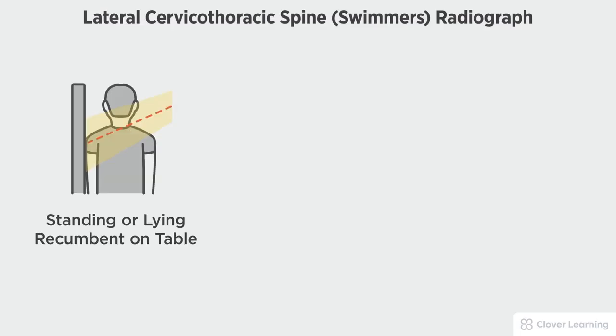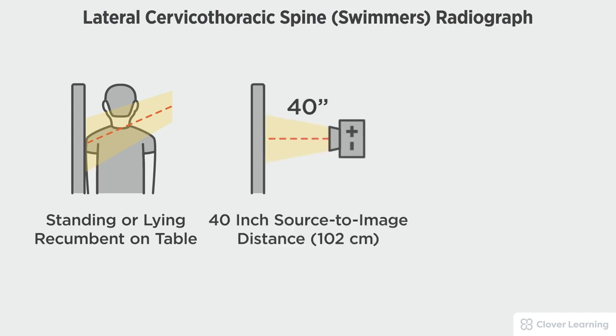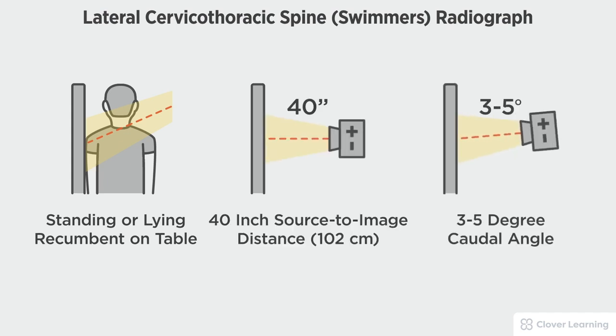In this view we will be demonstrating the lateral cervical-thoracic spine, or swimmer's view. The lateral swimmer's cervical-thoracic spine should be performed with the patient standing at the upright Bucky or lying on the table, a 40-inch source to image distance, and if needed a three to five degree caudal tube angulation.